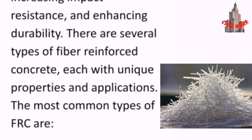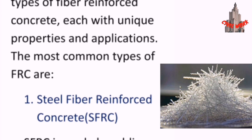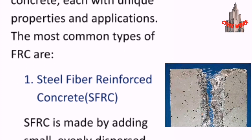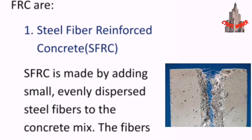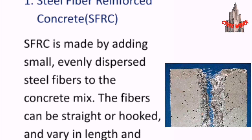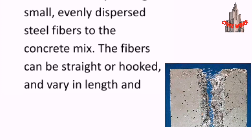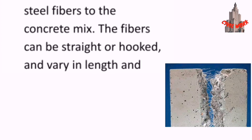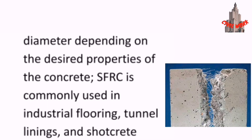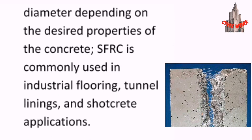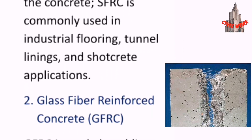There are several types of fiber-reinforced concrete, each with unique properties and applications. The most common is steel fiber-reinforced concrete, which is made by adding small, evenly dispersed steel fibers to the concrete mix. The fibers can be straight or hooked and vary in length and diameter depending on the desired properties. Steel fiber-reinforced concrete is commonly used in industrial flooring, tunnel linings, and shotcrete applications.